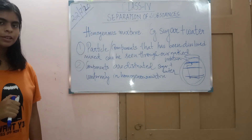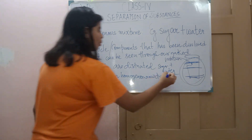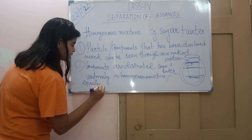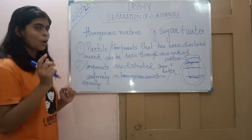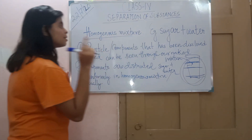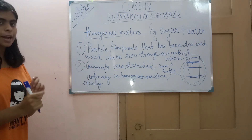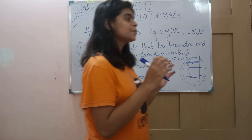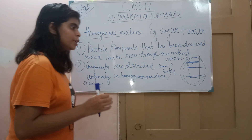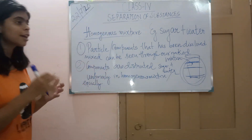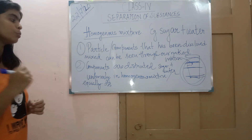So the mixture in which the components are equally distributed, or uniformly distributed throughout the mixture, we call it a homogeneous mixture. This is a key property of the homogeneous mixture: that the components that have been mixed get equally distributed. The mixture in which the components are equally or uniformly distributed, we call it a homogeneous mixture.